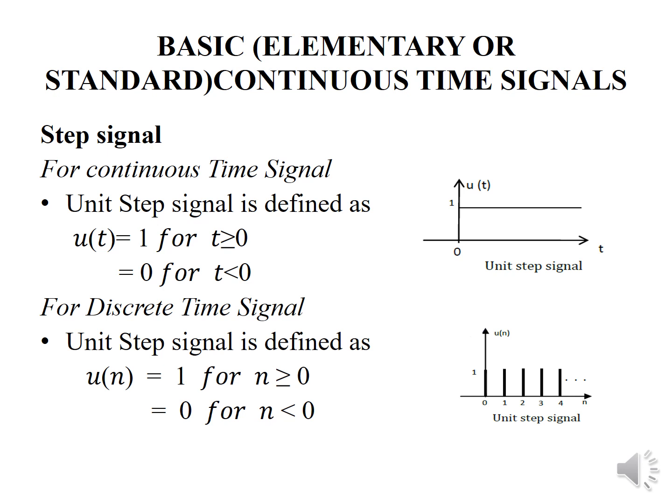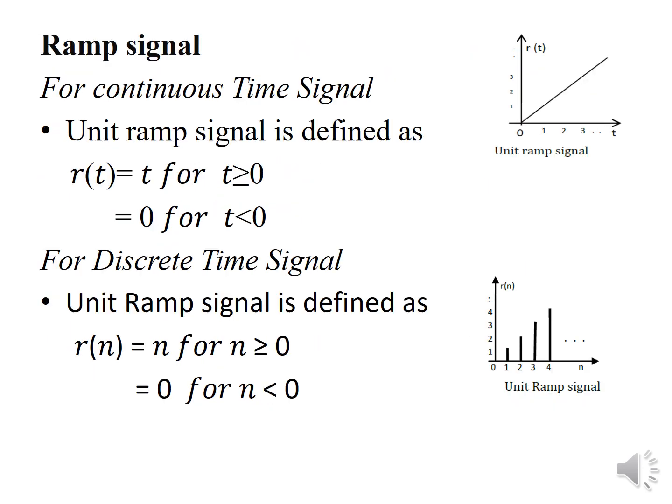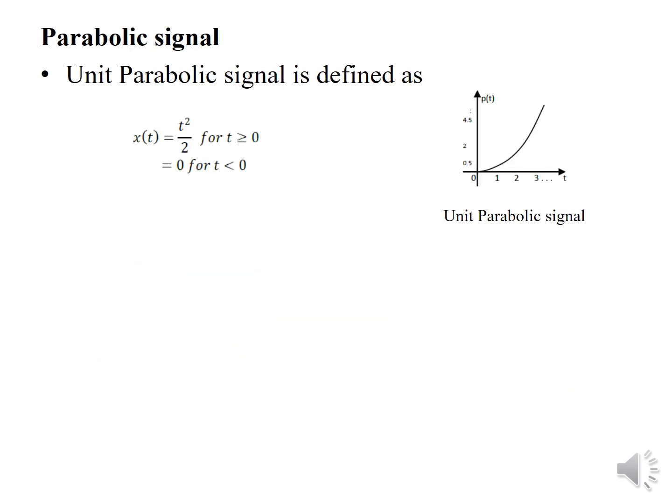For discrete time signal, the unit step signal is defined as u(n) = 1 for n ≥ 0 and 0 for n < 0, and this is the waveform. Ramp signal: for continuous time, the ramp signal is defined as u(t) = t for t ≥ 0 and 0 for t < 0. For discrete time, it is defined as u(n) = n for n ≥ 0 and 0 for n < 0. Unit parabolic signal is defined as u(t) = t²/2 for t ≥ 0 and 0 for t < 0, and this is the waveform.